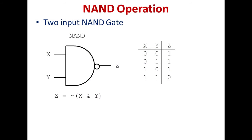Now, we will see the operation of NAND gate. The symbol of a two-input NAND gate is shown in the figure. The two inputs are A and B and the output is Y. The output of a NAND gate is 0 if and only if all the inputs are 1. The expression for NAND gate is Y = A · B (whole bar). From the truth table: inputs 0, 0 give output 1; inputs 0, 1 give output 1; inputs 1, 0 give output 1; and inputs 1, 1 give output 0.